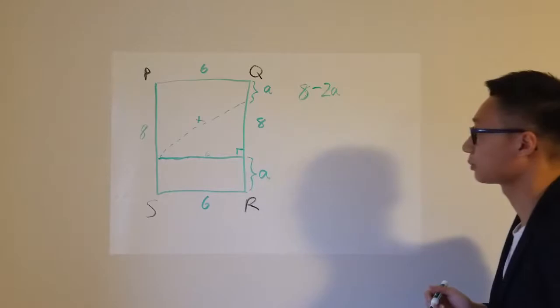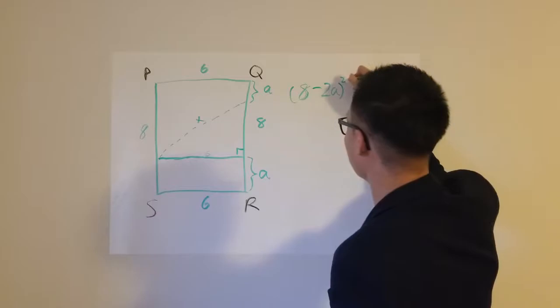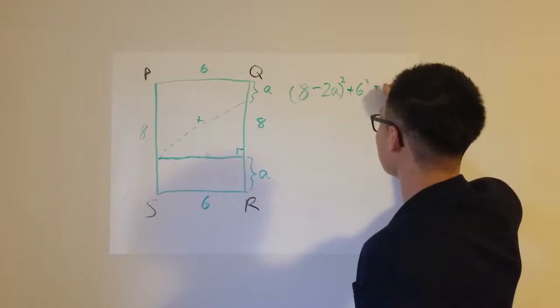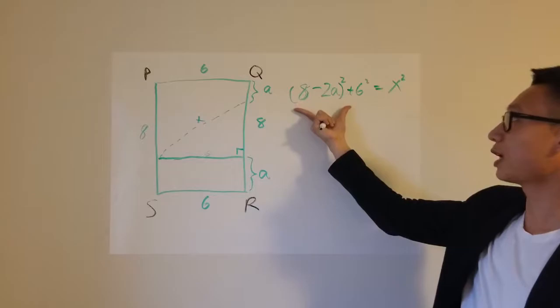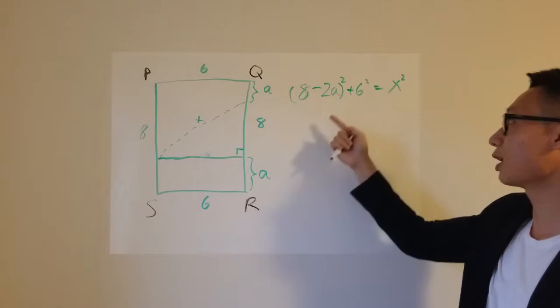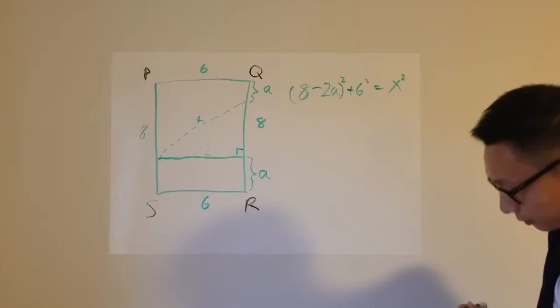Then coupled with my information right here, plus 6 squared, this should give me x squared. So I've transformed my problem again into finding the value of a, because if I can find the value of a, I can find the answer to this expression. And finding the answer to this expression, coupled with the 6 squared, would allow me to find x squared, which would in turn give me x.